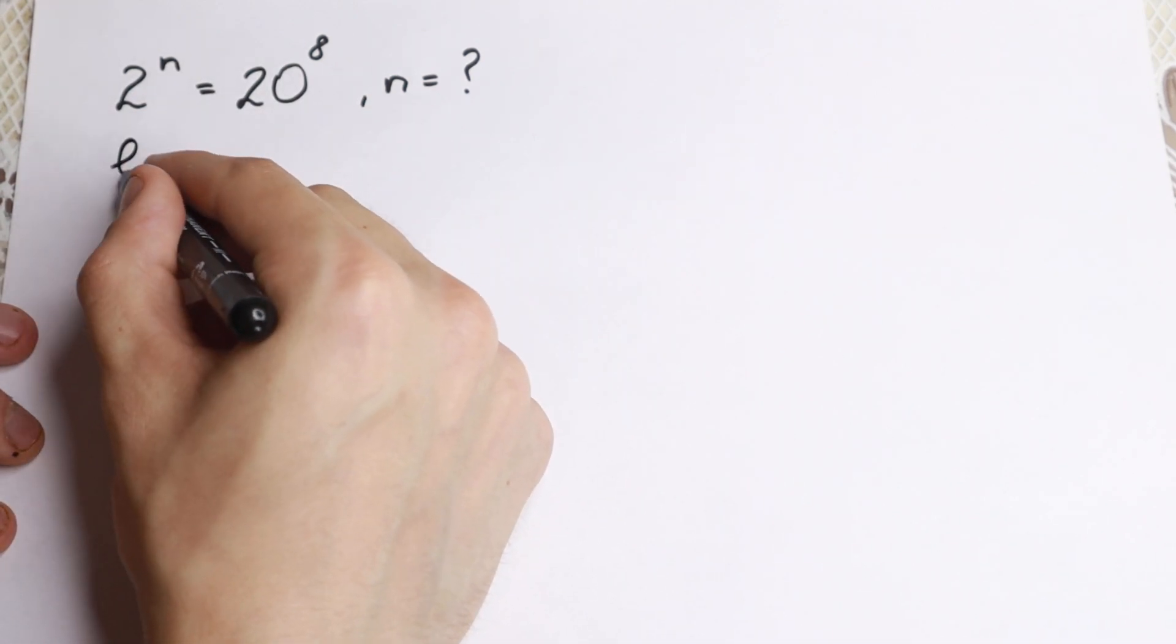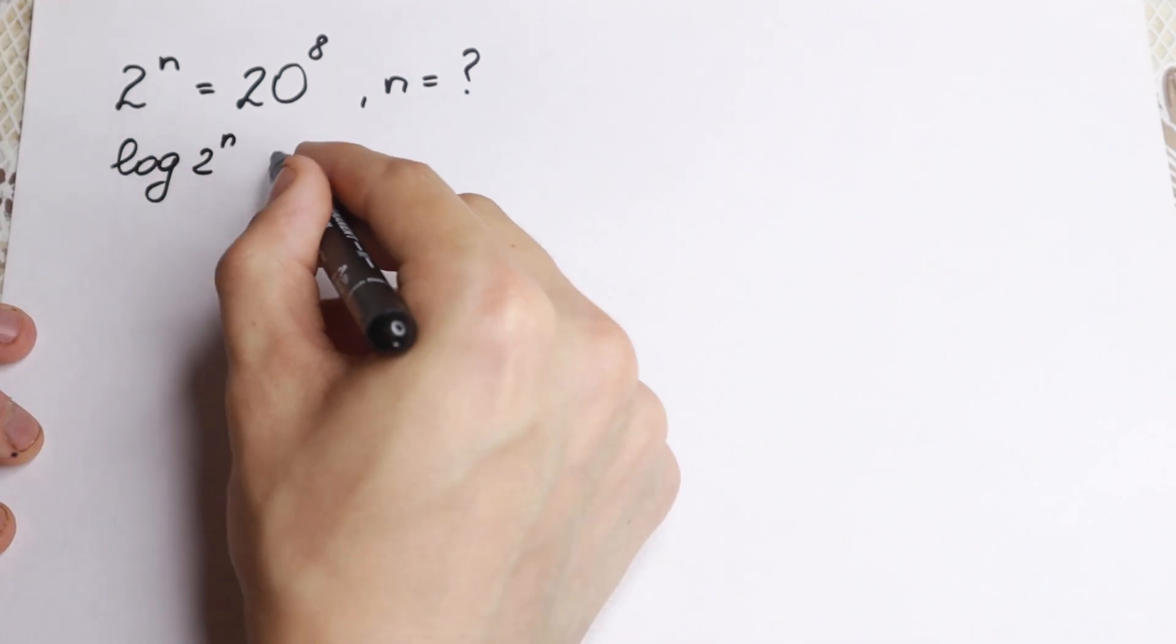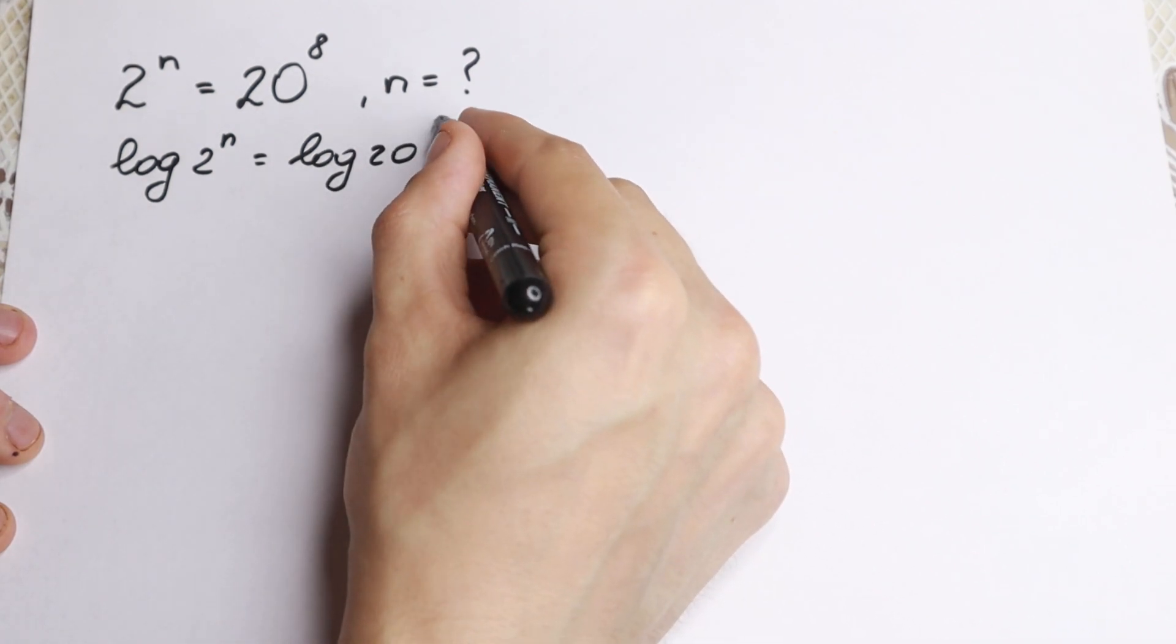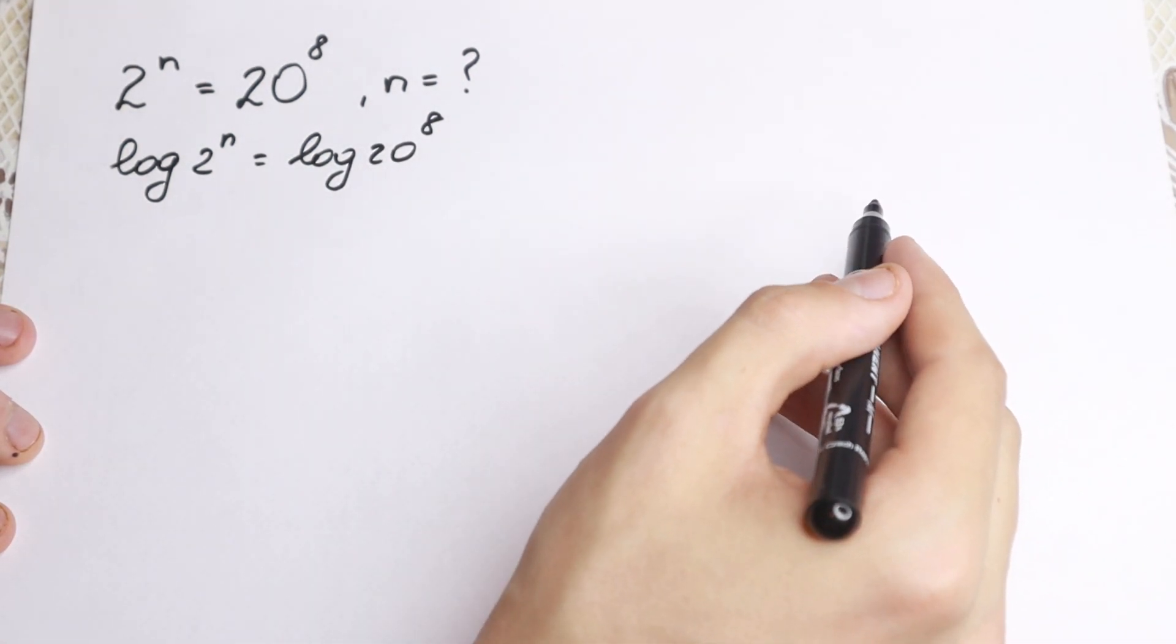Let's do this. Taking log on the left hand side we have log 2 to the n equal to log 20 to the 8. Okay, we just take log on both sides, this is really good.